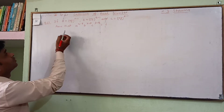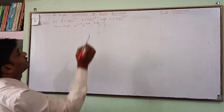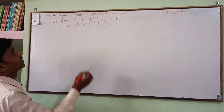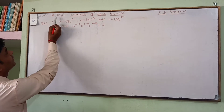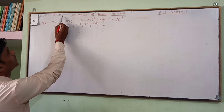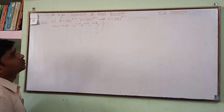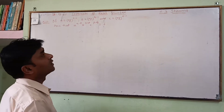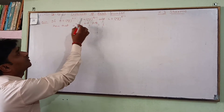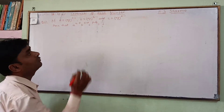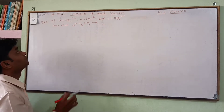Today we are going to solve a question of Standard 9, Exercise 2.1 from R.T. Sharma — that is the chapter on Exponents of Real Numbers.